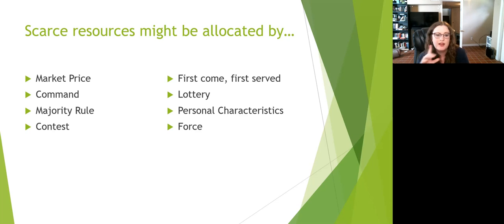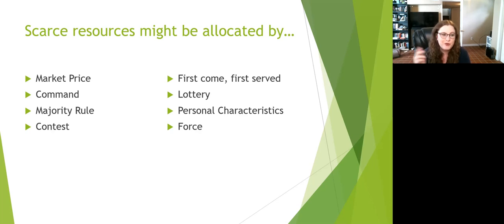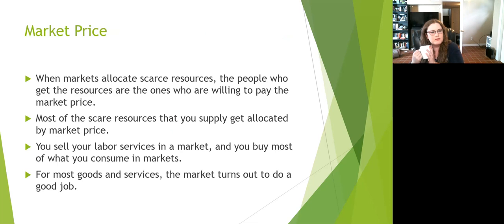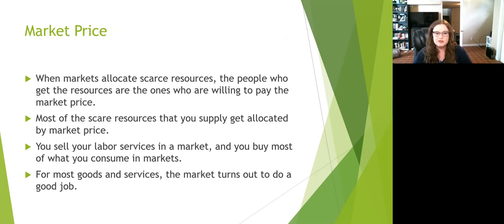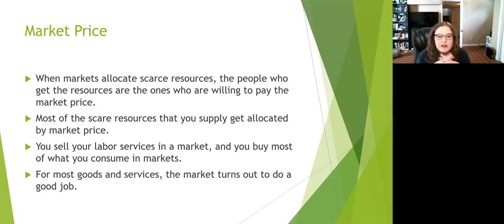First is market price — probably the one you're most familiar with. When we're trying to allocate a scarce resource, we put a price tag on it. If there are only so many cups of coffee you can make at your coffee shop, you set a price equal to about the number of customers you can handle. The people who get the resources are the ones willing to pay that market price. If you're not willing to pay $3 for a cup of coffee, it's allocated to the ones who are.